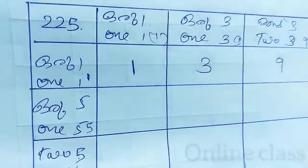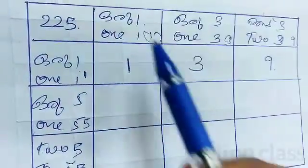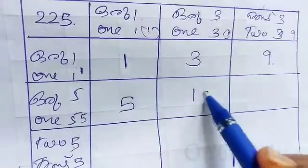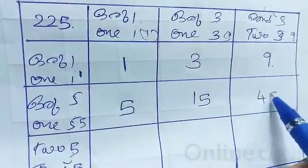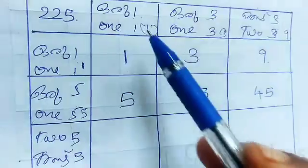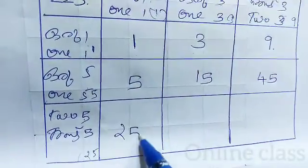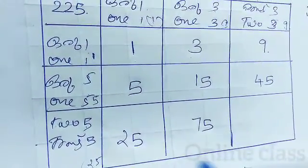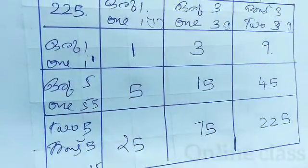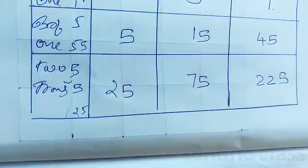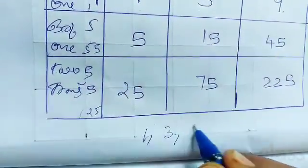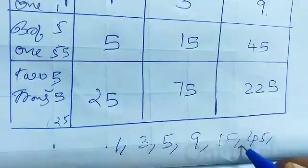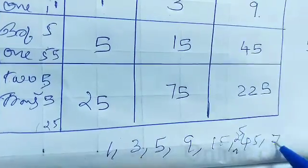1, 3, 1, 3 — so 1, 3, 9. Then 1 x 5 = 5. 3 x 5 = 15. 9 x 5 = 45. This is 1 x 25 = 25. 3 x 25 = 75. 9 x 25 = 225. If you want to write these factors, we will write them in order.